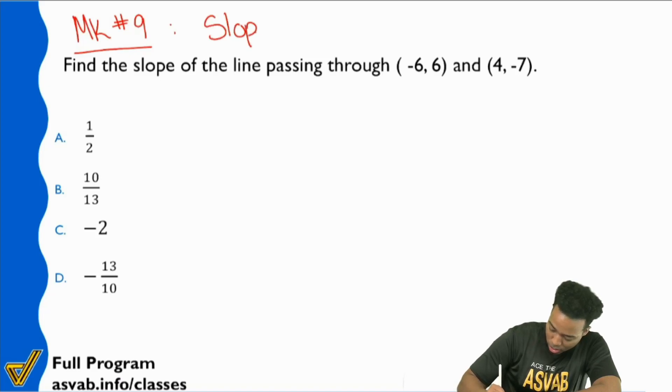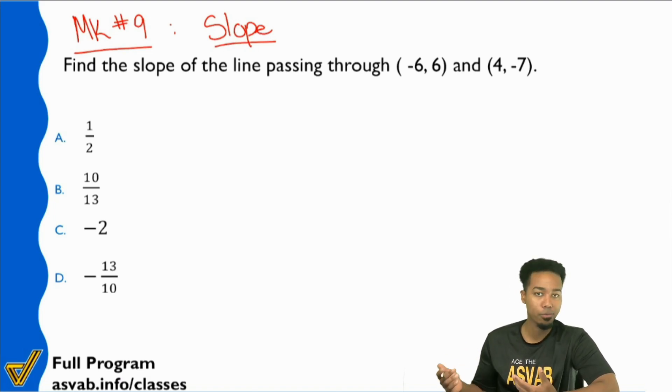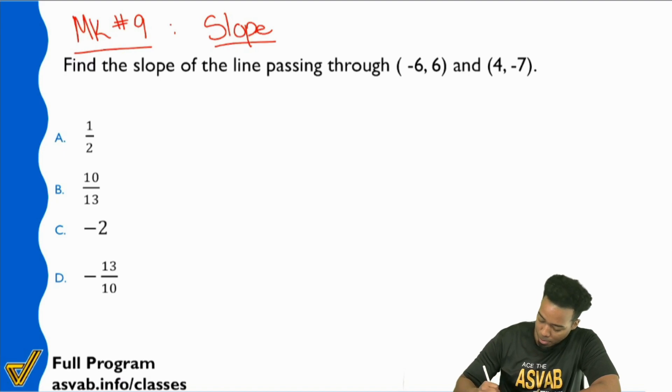So this is going to be slope, all right? This one's going to be slope. So here's how we're going to get this done. First of all, when it comes to slope, you've got another formula. So your formula for slope is going to be this.